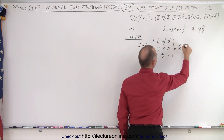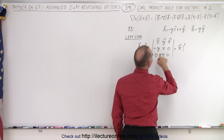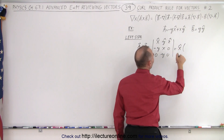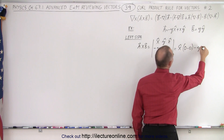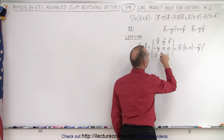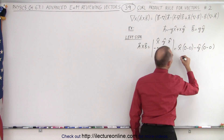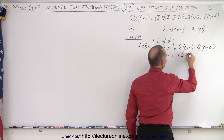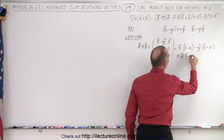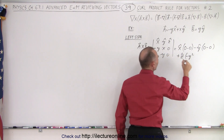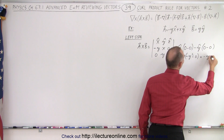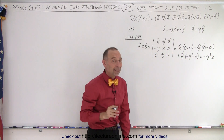This is equal to the x unit vector times x times 0 minus 0 times y, which is 0 minus 0. Minus the y unit vector times minus y times 0 and 0 times 0, which is again 0 minus 0. Plus the z unit vector times minus y times y, which is minus y squared, minus x times 0. So we end up with minus y squared in the z direction for that cross product of a and b.